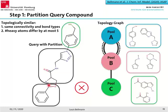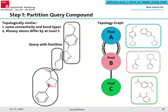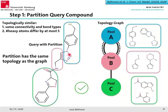For a topologically valid partition, we verify: aromatic bonds match the required two bonds, the single bond matches, and sizes are similar. We can assign the substructures to pools A, B, and C — so this partition is topologically similar and proceeds to the next step of the algorithm.